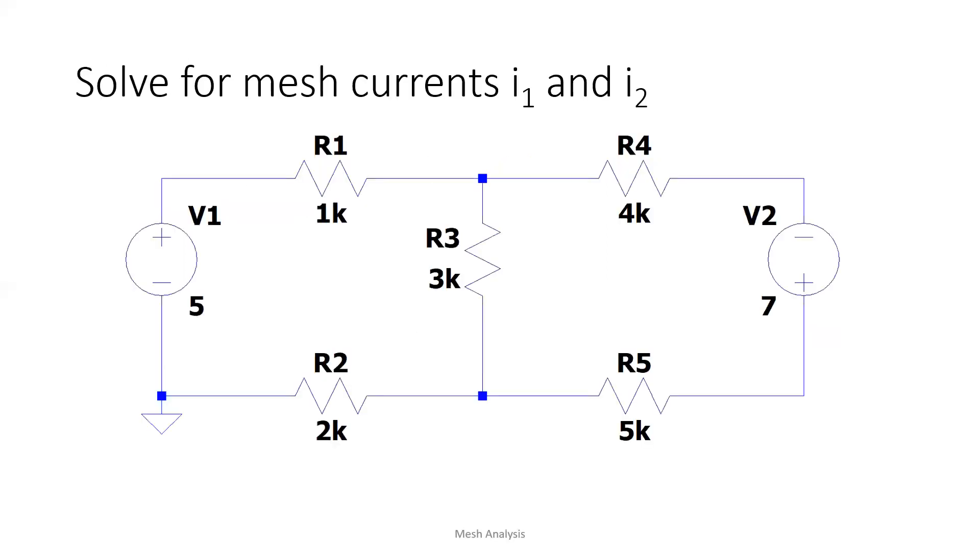So let's have this example. So let's solve for mesh currents I1 and I2. So first up, determine the number of meshes. So we have two meshes. Okay. There are two meshes.